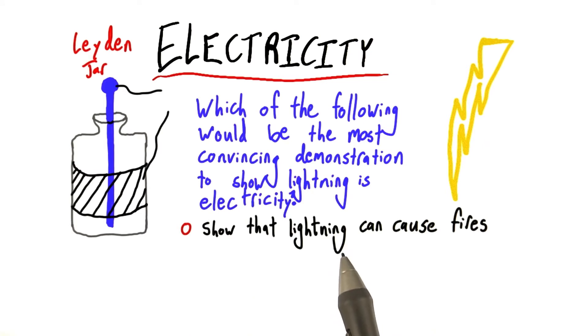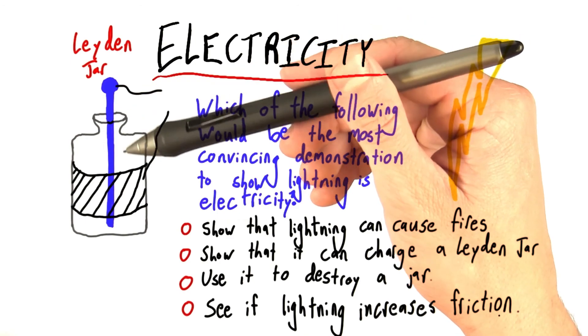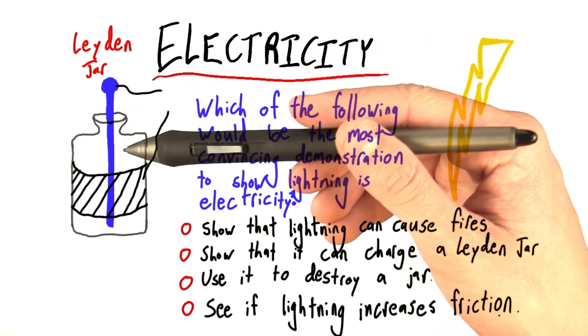Would we want to show that lightning, like a Leiden jar, can actually cause a fire? Would we want to show that we can use lightning directly to charge a Leiden jar? Would we want to use lightning to destroy a Leiden jar? Or would we want to see if lightning somehow increases friction? The thinking being that Leiden jars were charged by a process that involved friction.